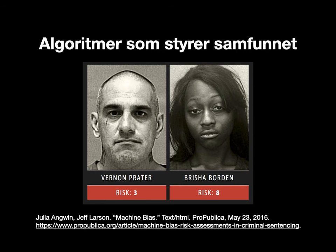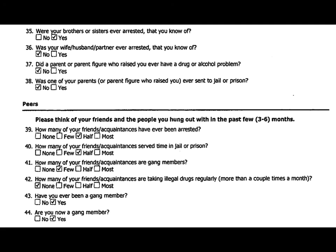When the judge ran this through a risk assessment system, it found that Brisha Borden's risk of reoffending was much higher than Vernon Prater's. The difference: she's Black and lives in a Black neighborhood; he's white. The risk assessment is based on data such as how many of your friends have been arrested, how many have served time in jail, and whether your parents have been to prison — data that systematically reflects existing racial disparities, since far more people in Black communities have been in jail than in white communities. These systems have immense bias built in that simply replicates social inequalities.